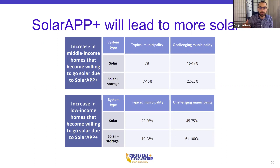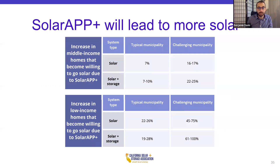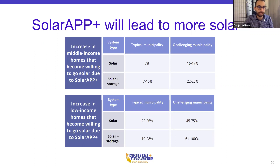These figures are very conservative. One of the impetuses for creating SolarAPP was San Jose, which built its own automated permitting system in 2015, resulting in a six-fold increase in solar permit applications. In terms of getting solar installed on more roofs and getting more batteries installed on more garages, we are very excited about SolarAPP, SB 379, and the CalAPP program.